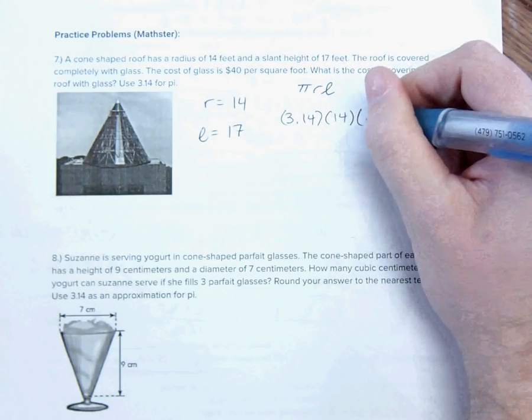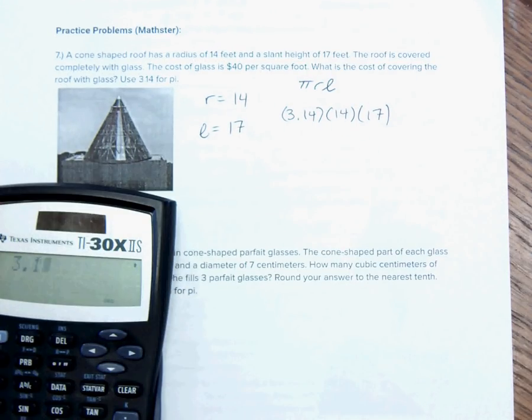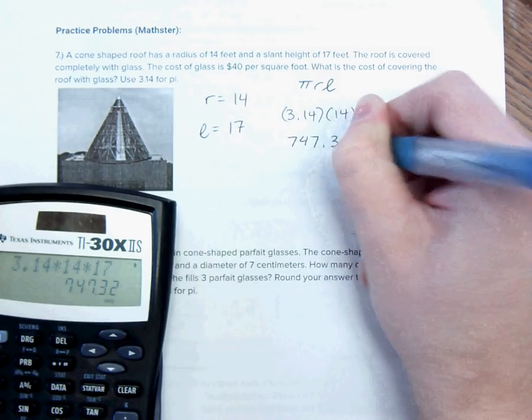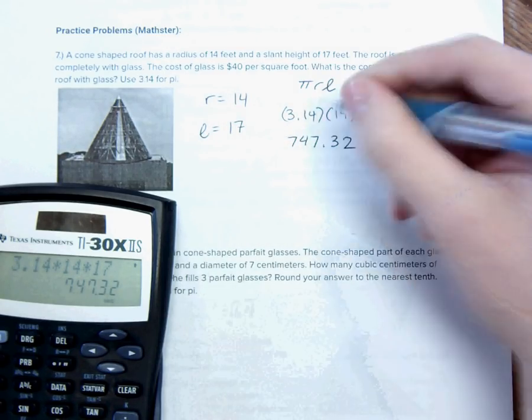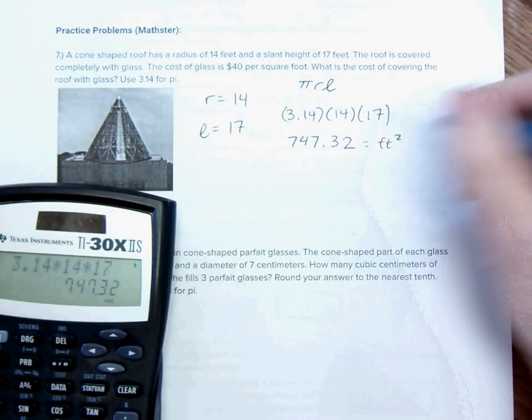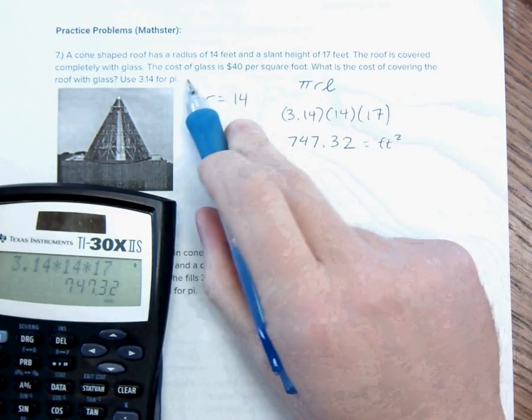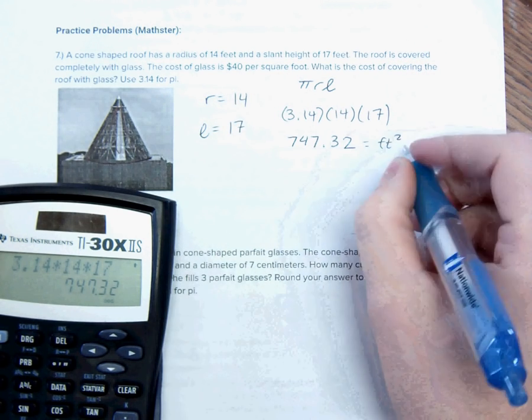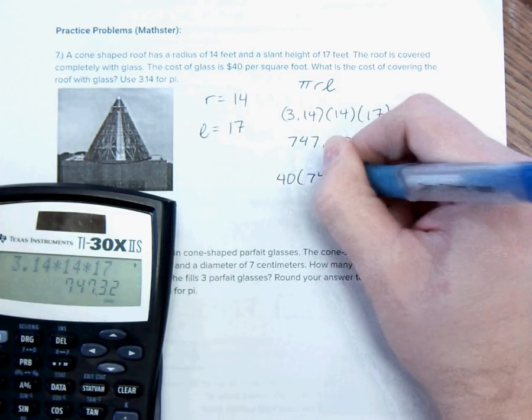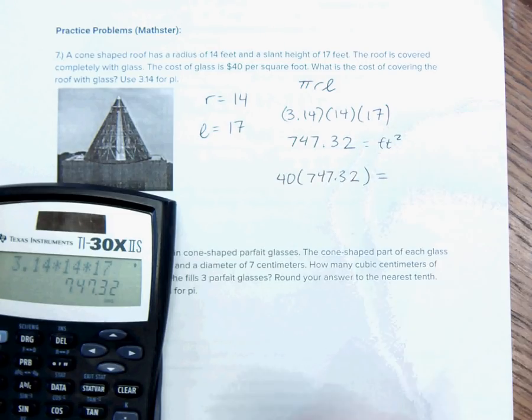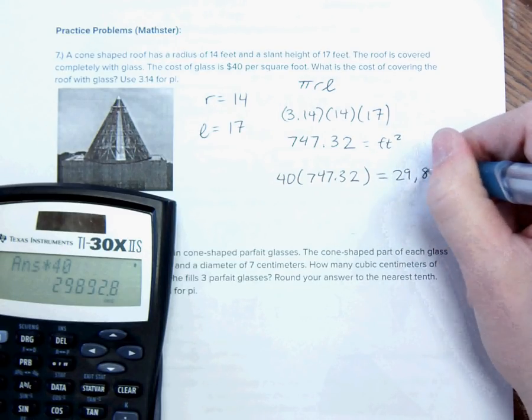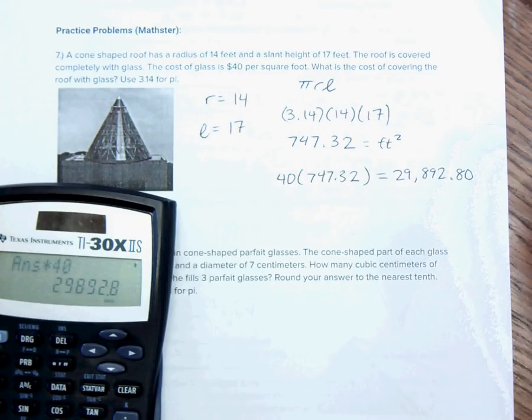So, that is 3.14, times 14, times 17. So, that gives me 747.32. Now, step two. This is the square feet that I'm covering. But we want to know the cost. So, the cost is $40 per square foot. So, if I had this many square feet, I would take this number and multiply it by 40 to get my money. So, that number times 40 is equal to 29,892.80, since it's dollars.